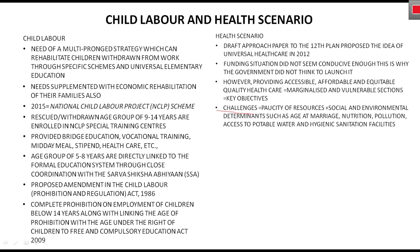Challenges भी बहुत सारे हैं। सबसे पहले paucity of resources — पैसे कम हैं। दूसरा, social and environmental determinants — जैसे कि age at marriage, जहाँ अभी भी 18 से कम उम्र में शादियाँ होती हैं। Nutrition एक बहुत बड़ा issue है — most children और mothers malnourished हैं। इसके अलावा pollution, access to portable water की कमी, और hygienic sanitation facilities का अभाव भी health scenario को worse बनाते हैं।